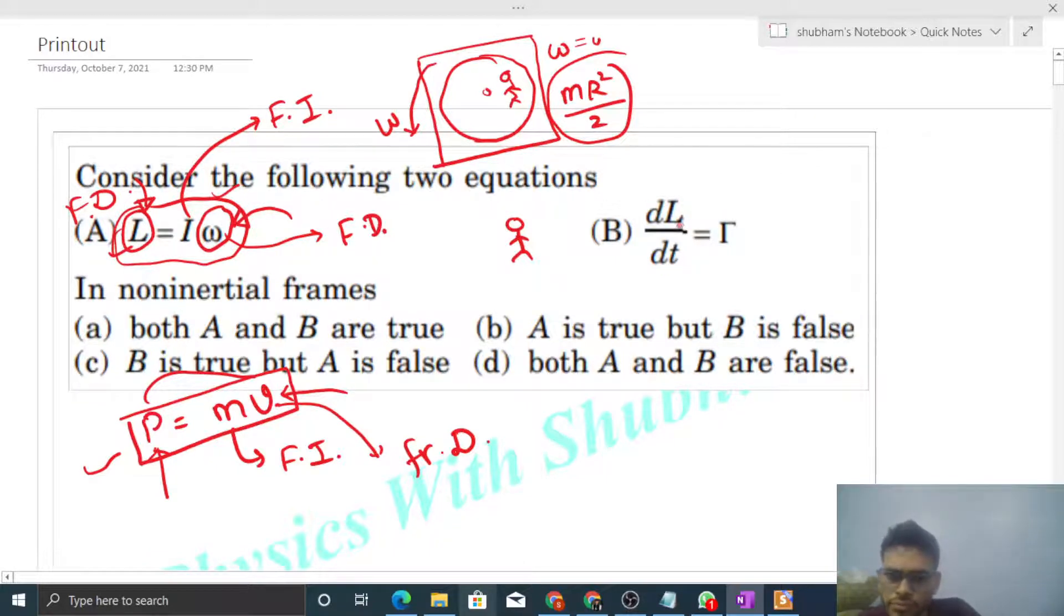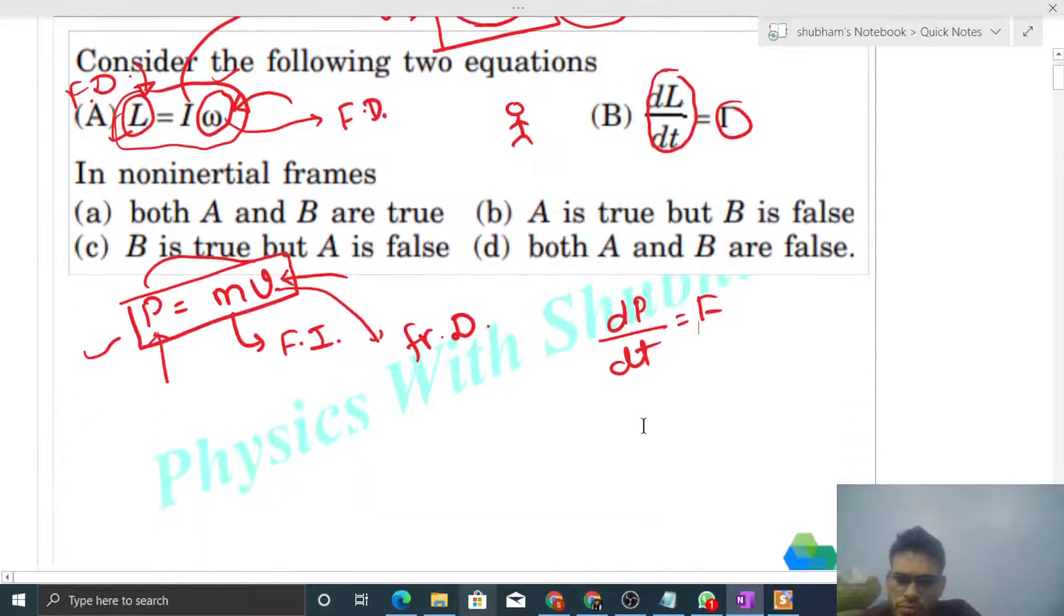Now explain the second equation. That is the rate of change of angular momentum, that is equal to torque. In linear parameters it would be rate of change of momentum that is equal to force. Now suppose any body has many forces acting on it F1, F2, F3.